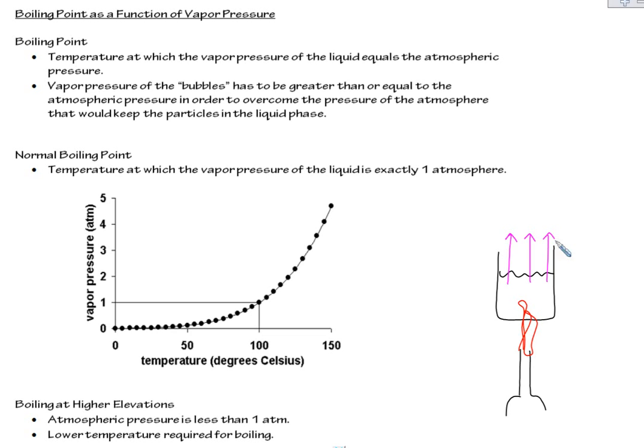I'm heating this liquid and getting pressure from these particles entering the gas phase. In order for them to truly enter the gas phase, this pressure from the liquid needs to at least be equal to the atmospheric pressure. So here's the pressure from the liquid—we'll call it vapor pressure.